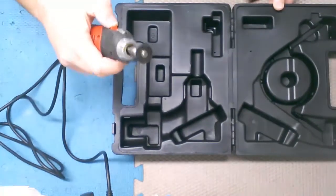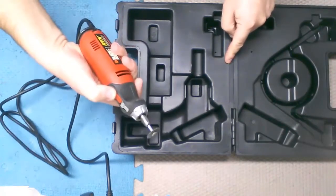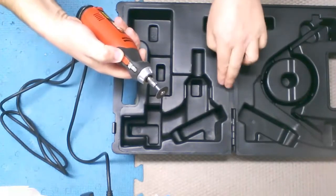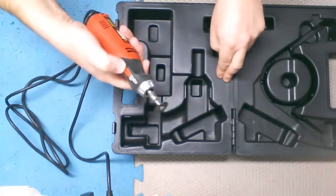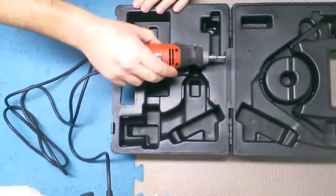So you turn on your Dremel and don't go too fast because you don't want to melt the plastic. I find that a low to medium speed is the best way to go. Turn it on, away you go, cut around the edges.